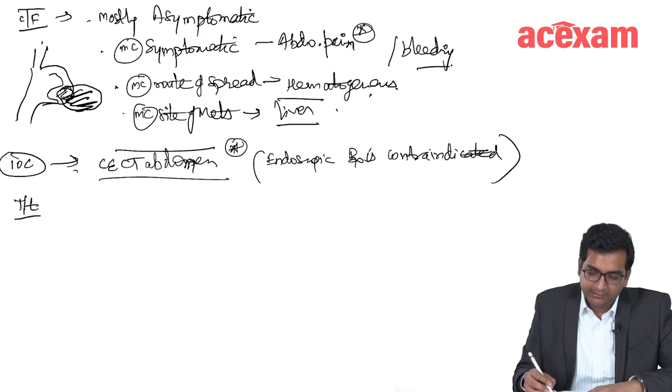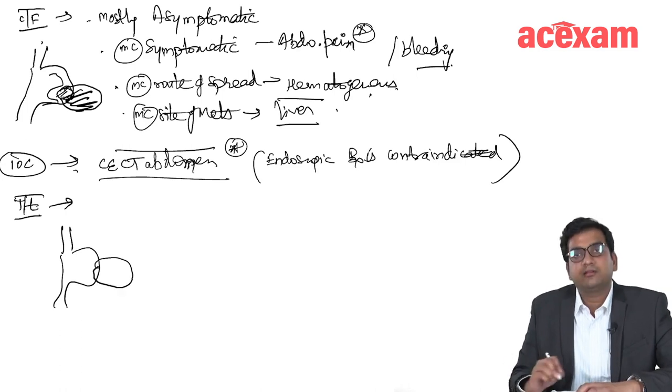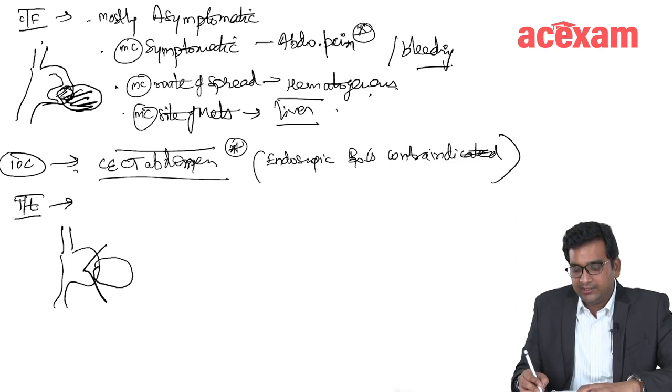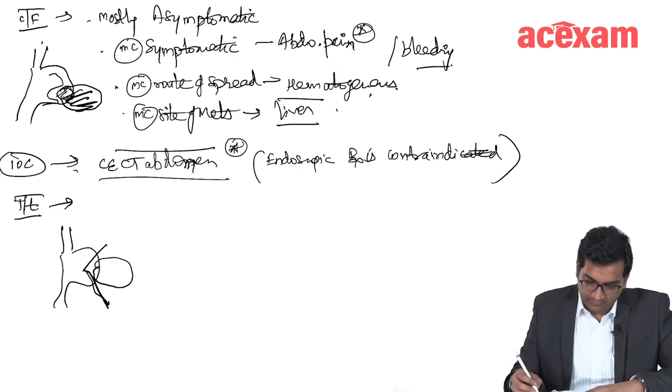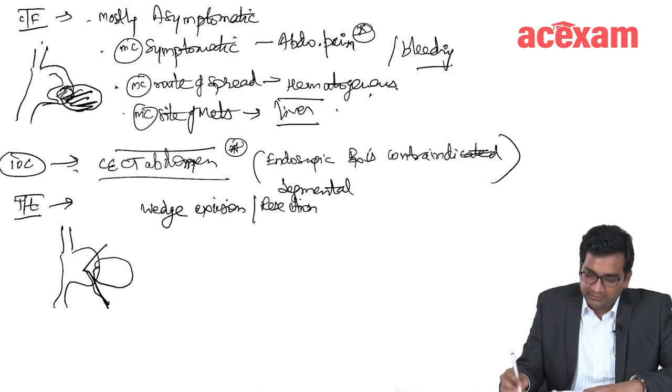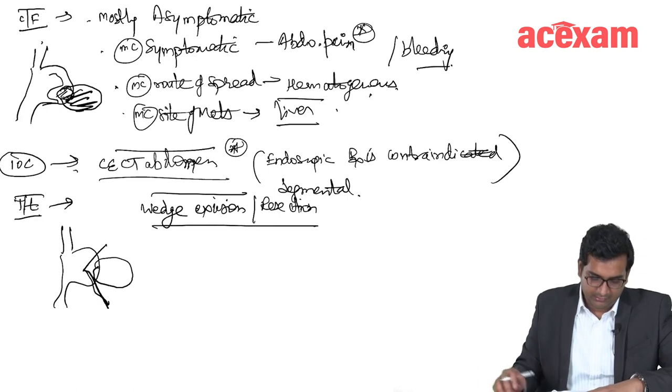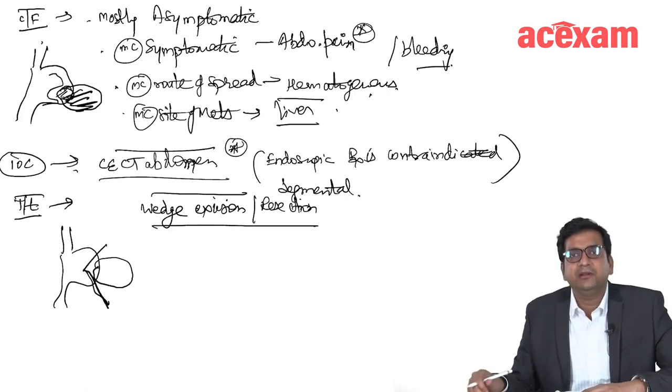What is the treatment? Suppose if there is a GIST arising from the greater curvature, we can go for wedge excision. Generally, we take 2 centimeter margin. The treatment of choice is wedge excision, oblique resection, or oblique segmental resection. Wedge excision or segmental resection. We take 2 centimeter margin.